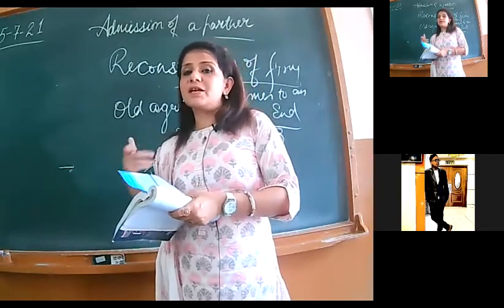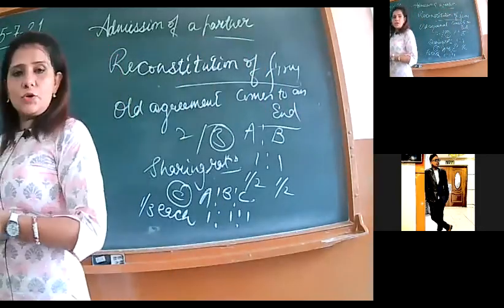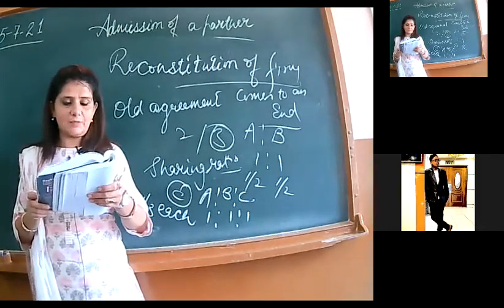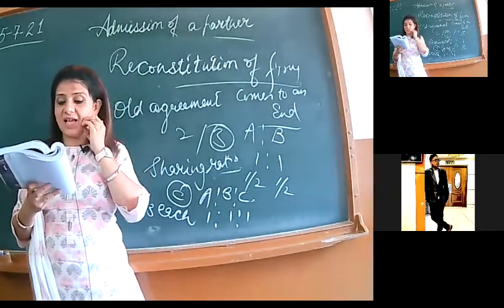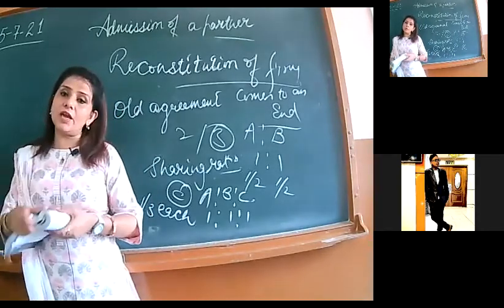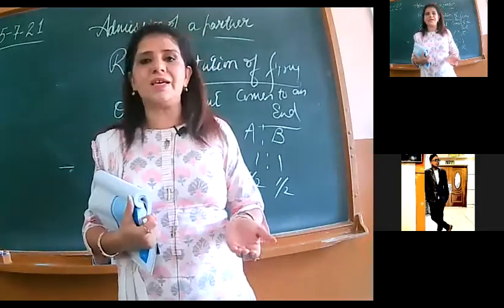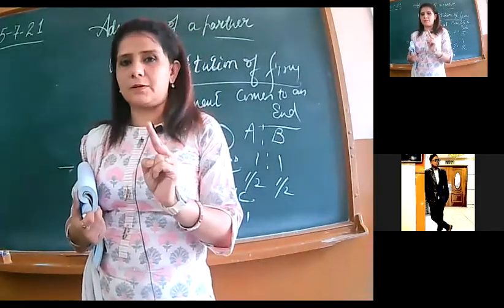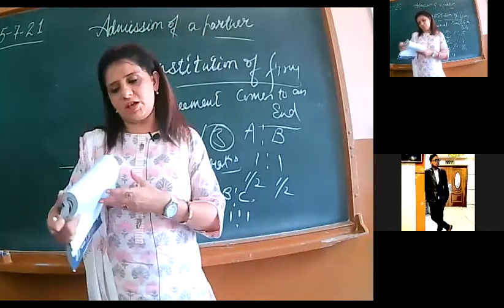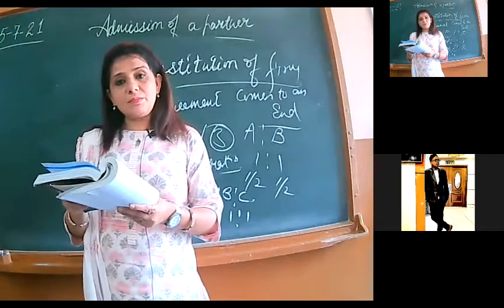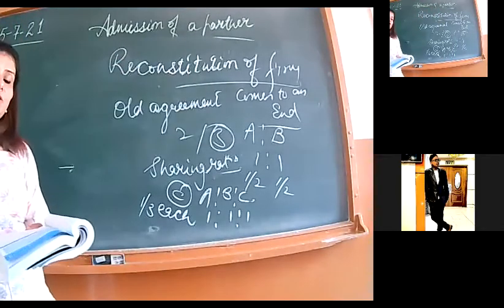How can a new partner be admitted? With the consent of all the old partners. Suppose deed mein likha hai, 50% consent is enough, then we will admit the partner. If deed is silent, then we need the consent of all the partners to admit the new partner. A says I want my son should be the partner, but if B doesn't agree, in that case admission cannot happen because we need consent of all. When new partner's admission happens, he gets two rights. What rights? He can share the profit and he can even share the assets of the firm.